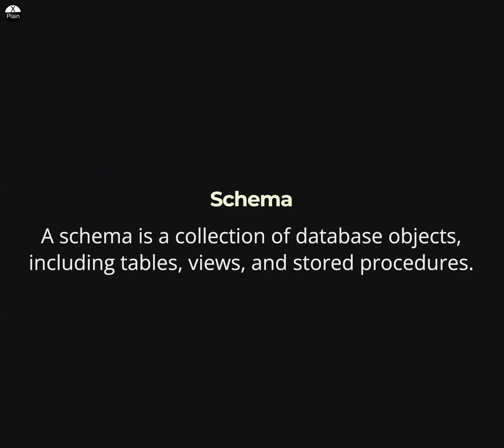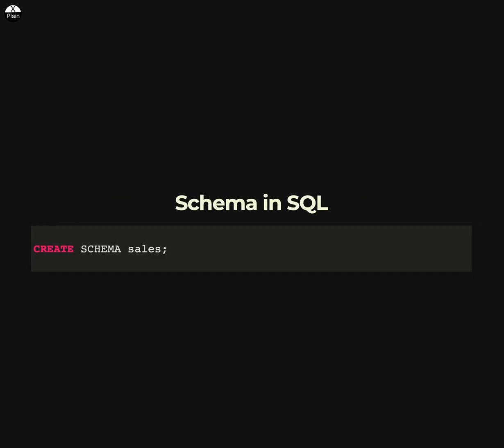In SQL, a schema is a collection of database objects including tables, views, and stored procedures. A schema is essentially a namespace that contains these objects and helps to organize them within a database. Here is an example of creating a schema in SQL — this statement creates a new schema called sales.